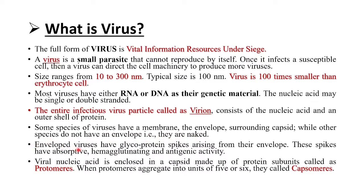Enveloped viruses have glycoprotein spikes arising from their envelope. These spikes have absorptive, haemagglutinating, and antigenic activity. Viral nucleic acid is enclosed in a cavity made up of protein subunits called protomers. When protomers aggregate into units of 5 or 6, they are called capsomers.